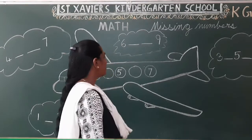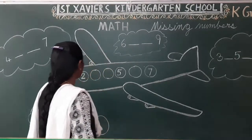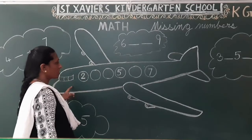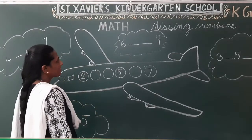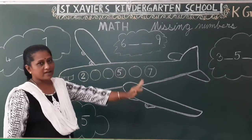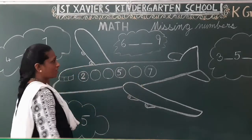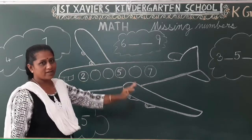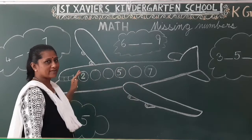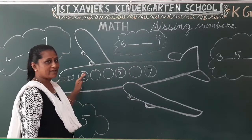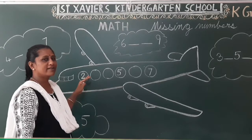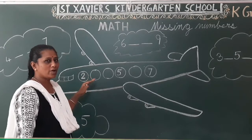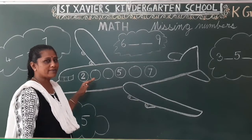What are missing numbers? What are we going to learn — in the sky, what are the clouds? You can see an aeroplane there. You can see an aeroplane.